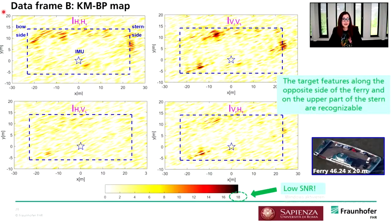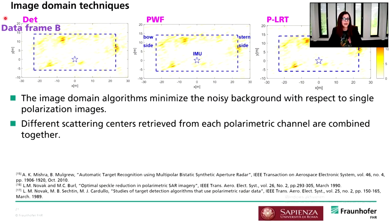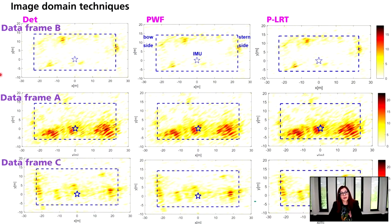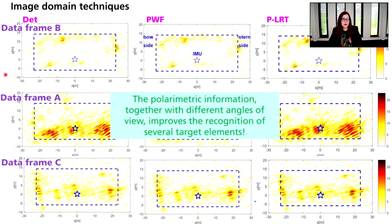For data frame B, which presents lower SNR, we can nonetheless see target features along the opposite side of the ferry and the upper part of the stern. We try to combine the four images into one by applying three different image domain techniques from the literature. The results show that different elements are now combined in one image with quite similar outcomes across methods, and in all cases the noisy background is significantly minimized so that target features are more visible. These image domain techniques can also be applied to data frames with higher SNR, further combining polarimetric information with different angles of view to improve recognition of several target elements.